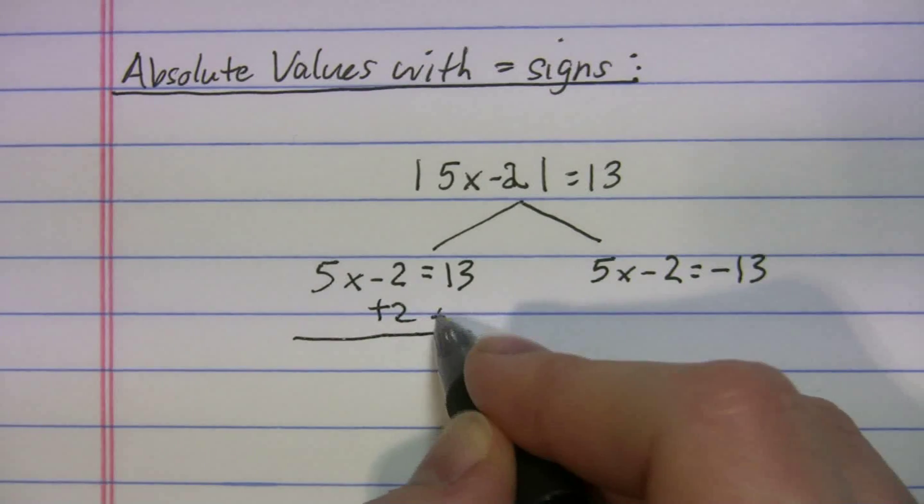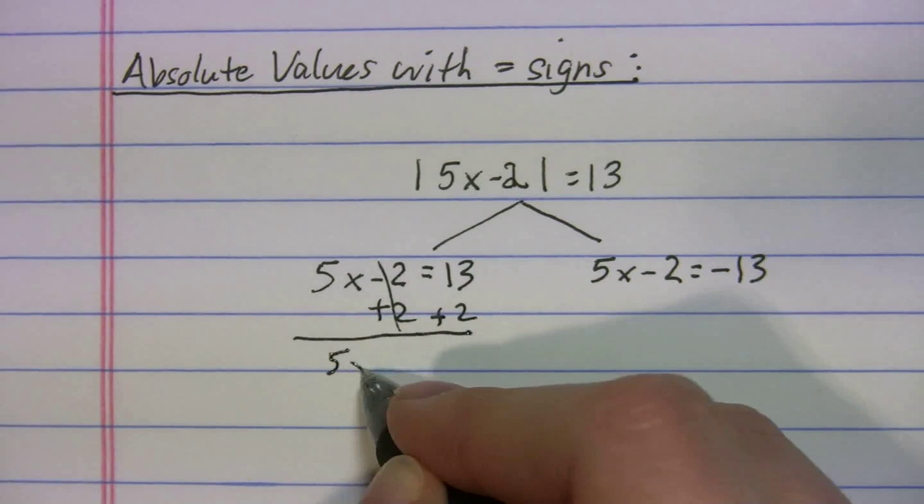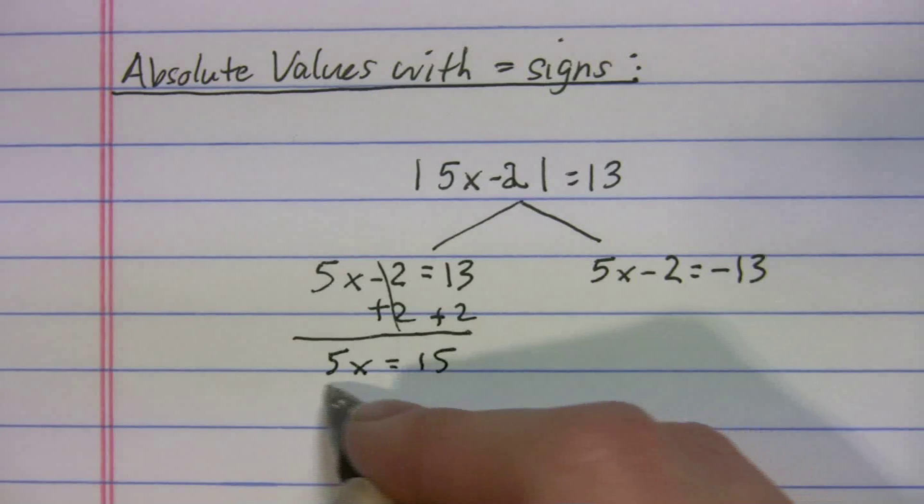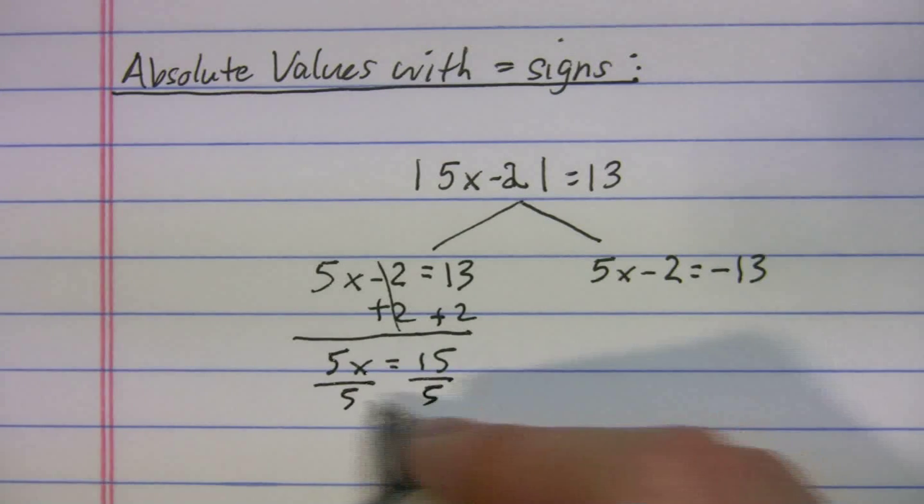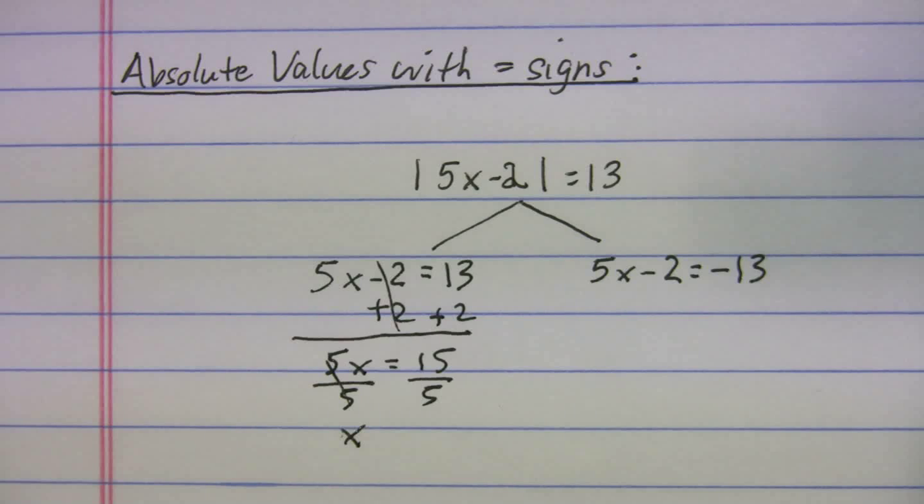So we'll add 2 and go through the whole thing here. 5x is equal to 15. We'll divide by 5 and we get x is equal to 3.